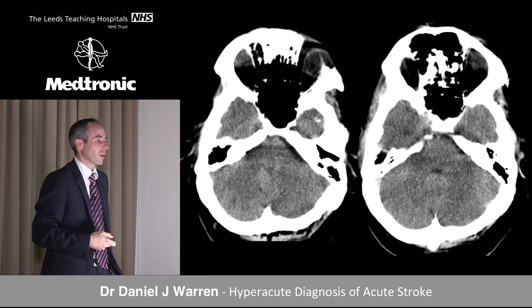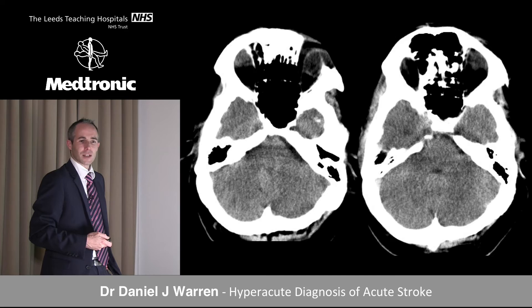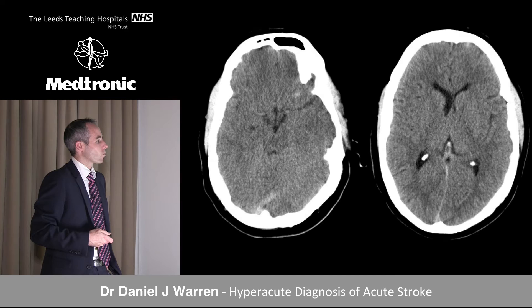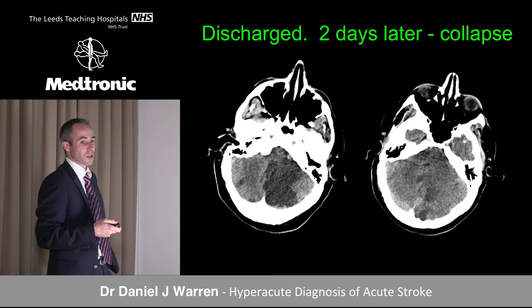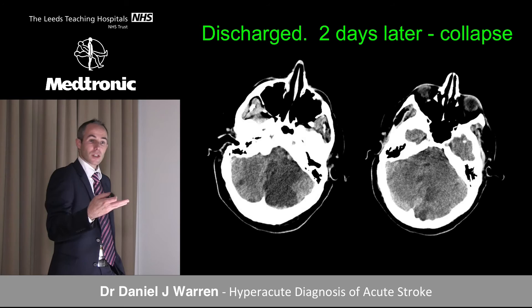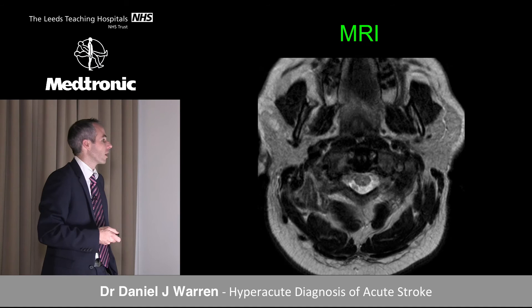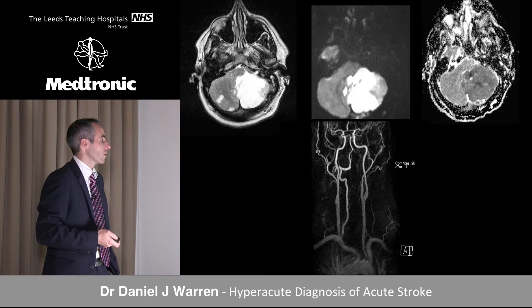Sometimes you walk past things because you don't look for what should be there. The fourth ventricle should be a well-defined rounded structure — here you can't see it. Grey-white differentiation is present in one hemisphere but not the other. Higher up, the basal cisterns are partially effaced. The scan was considered normal and the patient discharged. Two days later they returned: the infarct had matured, the fourth ventricle was further effaced, evolving hydrocephalus had developed, and MR confirmed vertebral dissection with a large posterior territory infarct.